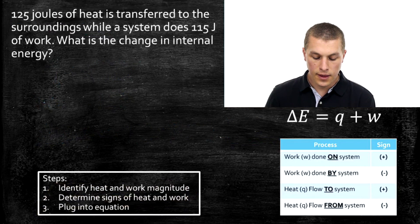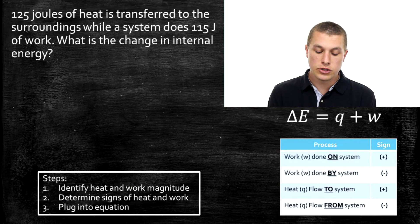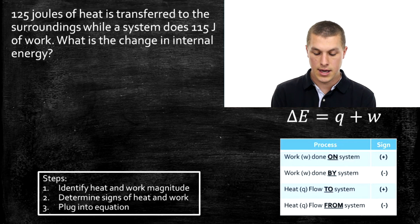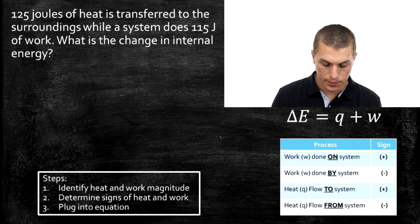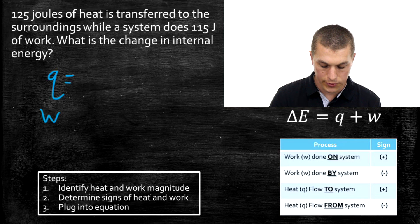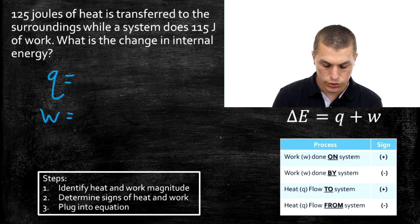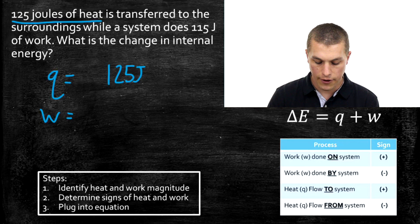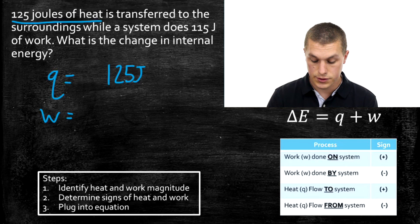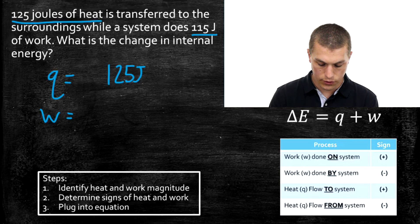One more sample problem, worded as a textbook might: '125 joules of heat is transferred to the surroundings, while a system does 115 joules of work. What is the change in internal energy?' Following our steps, we first identify the magnitudes: there's 125 joules of heat and 115 joules of work. We write both values down, leaving spaces to fill in the signs.